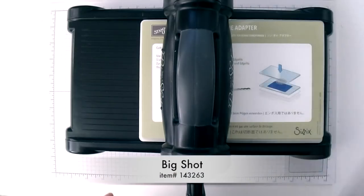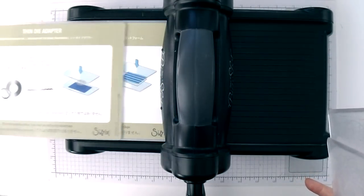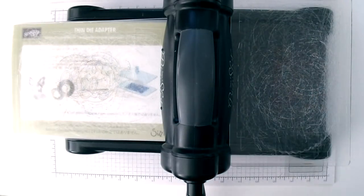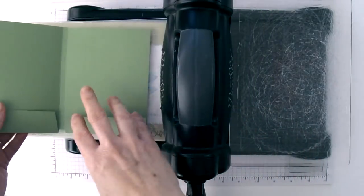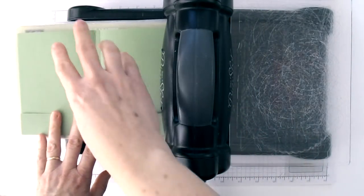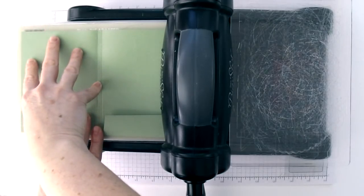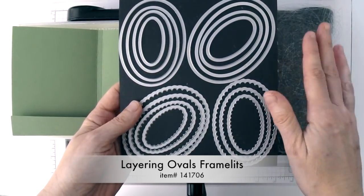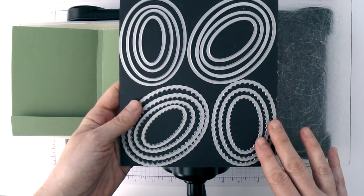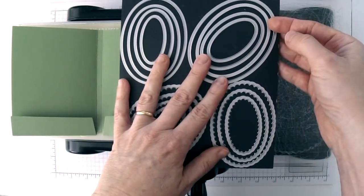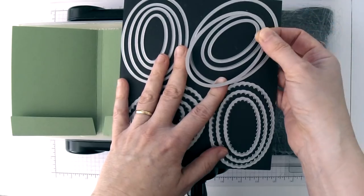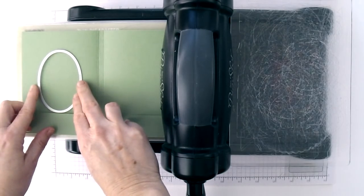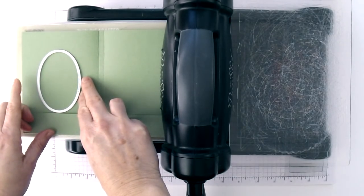Then you're going to need your Big Shot and I've got my whole platform here including the thin die adapter. Then I'm going to use my cutting plate and then I'm going to take the piece that I just scored and folded and place it on here. We're going to want to cut the oval on this side because that's where the front will be. I've got my layering ovals framelits here and you'll notice you have both smooth framelits and scallop framelits. We're going to use the smooth framelits today and I'm going to use the third largest framelit.